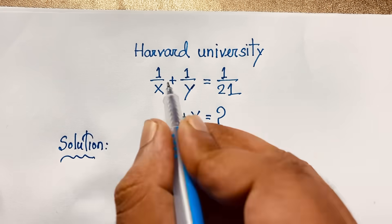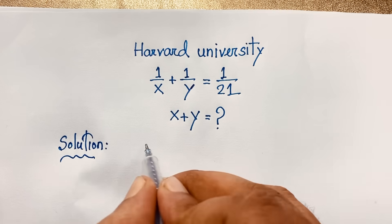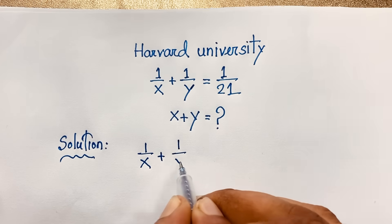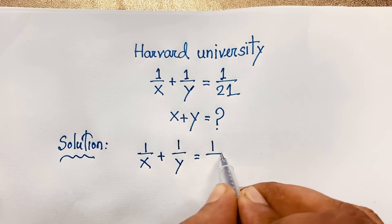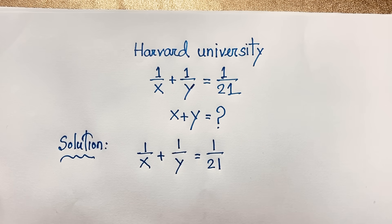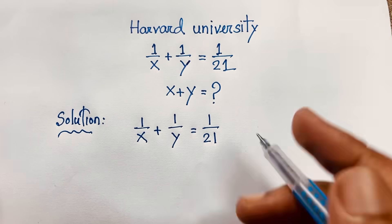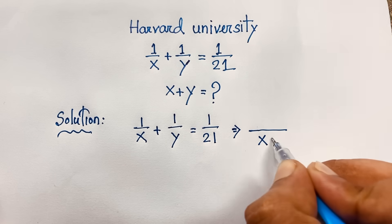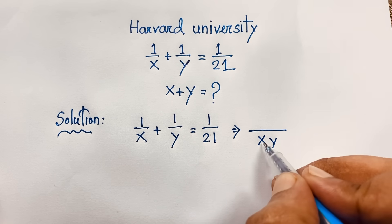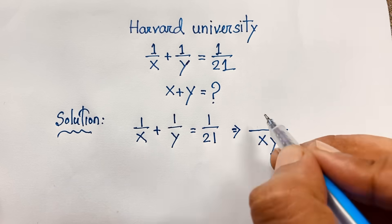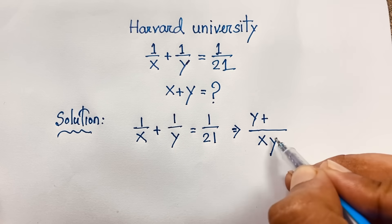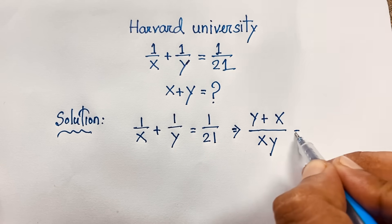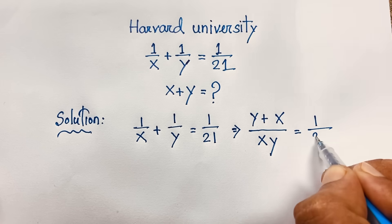Our question is 1 over x plus 1 over y is equal to 1 over 21. Now, you can see easily the least common value is xy. Then xy divided by x gives y, and y times 1 gives y. Then xy divided by y gives x, and x times 1 gives x, all equal to 1 over 21.